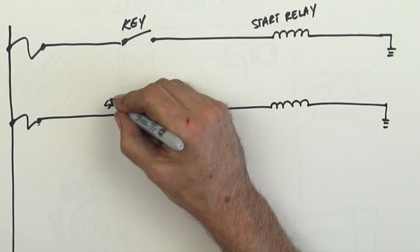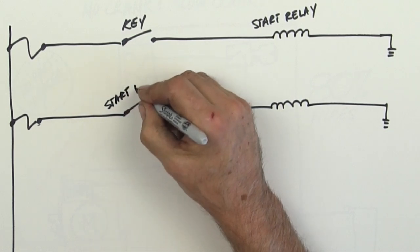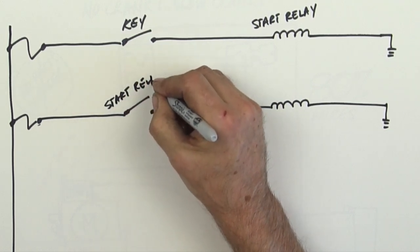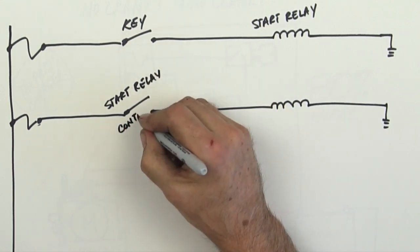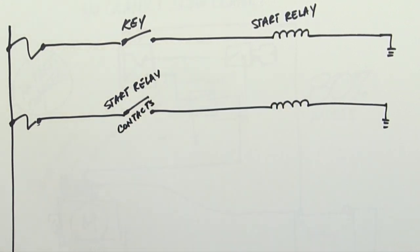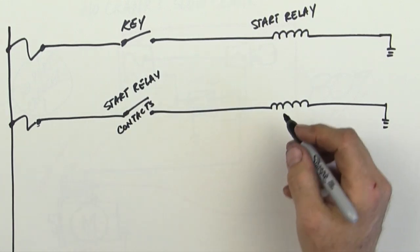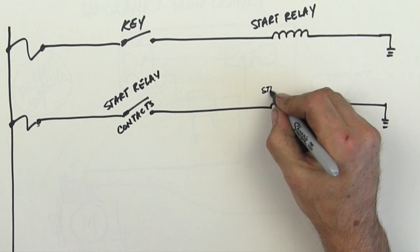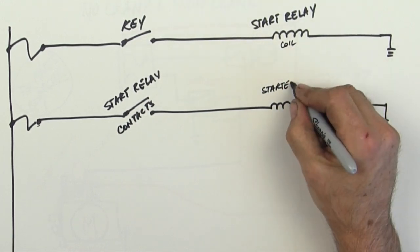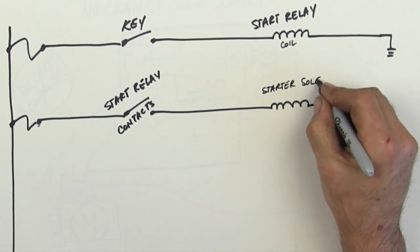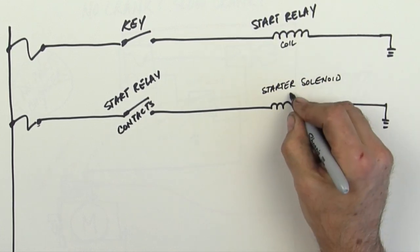So here's your start relay contacts. And then you have your starter solenoid coil. Make sure that's right, starter solenoid coil.